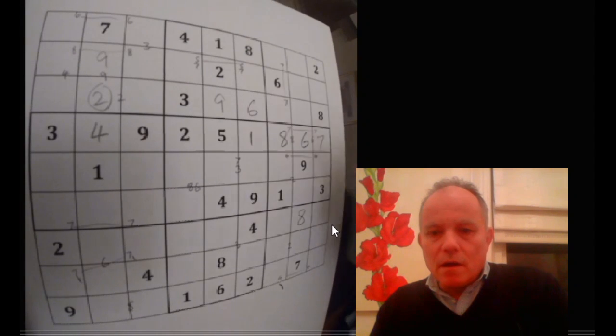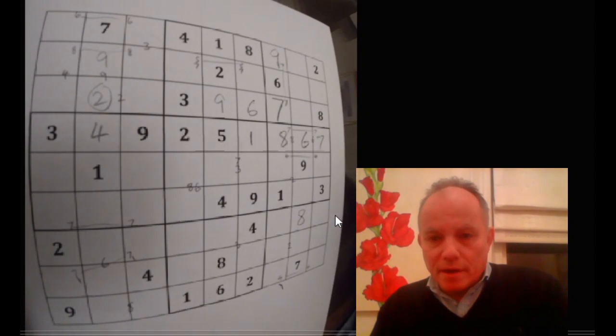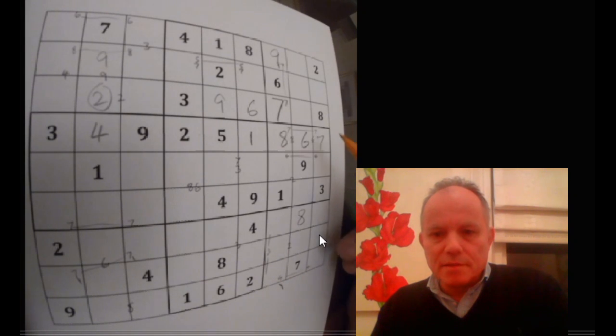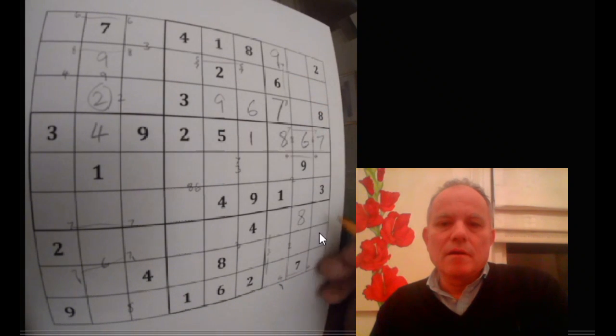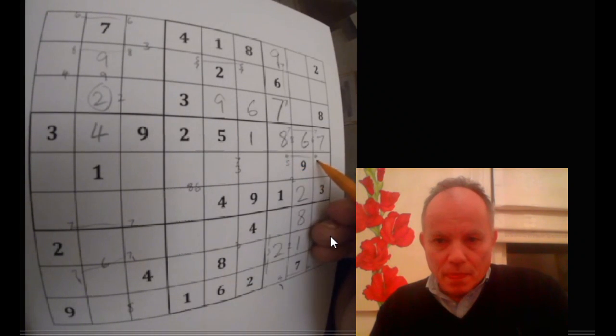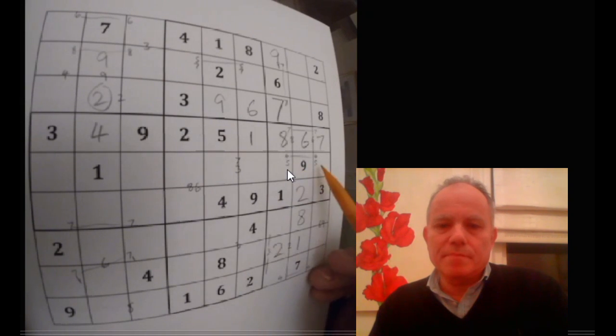With that two there, quite an important spot is the only place for a four now, because there must be a four in these two cells here. We've got a nine-seven pair up here. In fact, it is nine there and seven there. That gives us a nine-six pair in these two cells here, and that rules out a lot. There's only one place left where the one can go. That positions two, and we've got a four-five pair here.